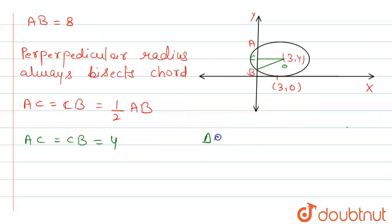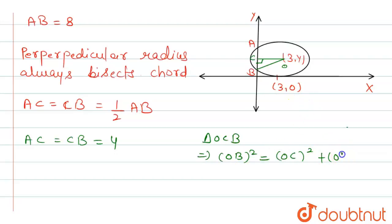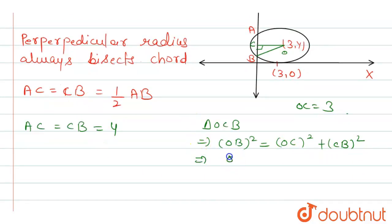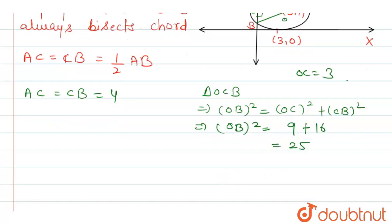By the triangle OCP, using the Pythagorean theorem with the right angle at C: OB² equals OC² plus CB². The distance OC equals 3 (as given) and CB equals 4. So OB² equals 9 plus 16 equals 25, giving OB equals 5.